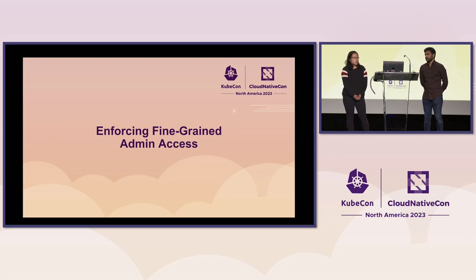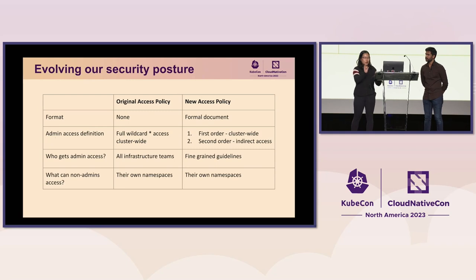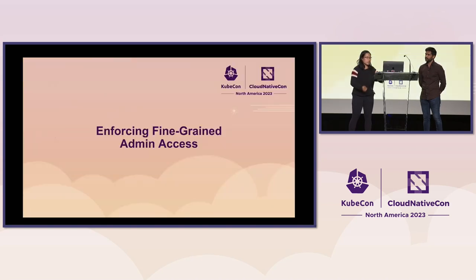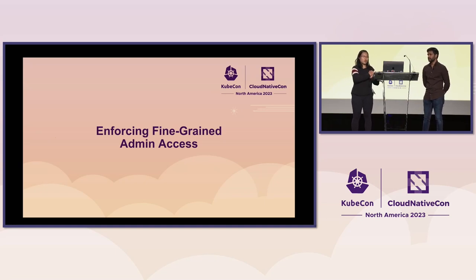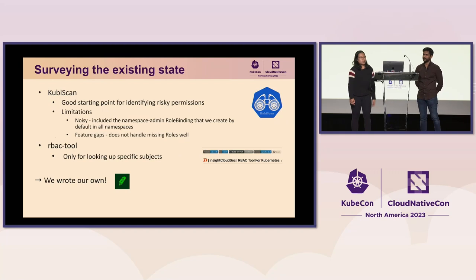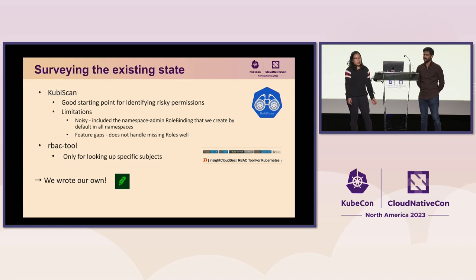We enumerated what needed to be done and ranked by priority, targeting quick wins — low effort, high impact. The first step was to enforce fine-grained admin access: instead of granting full wildcard access to infrastructure teams, we'd create an allow-list of permissions following the principle of least privilege. To do this, we first surveyed the existing state — looking at what Google Groups existed for various infrastructure teams and where they appeared in RBAC resources.